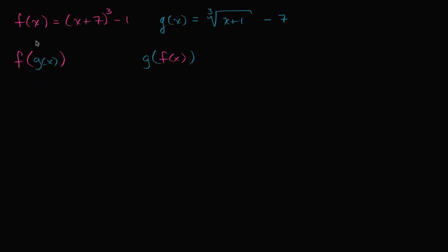All right, let's first evaluate f of g of x. That means g of x, this expression, is going to be our input. So everywhere we see an x in the definition for f of x, we replace it with g of x. So f of g of x is going to be equal to — I see an x right over there, so I write all of g of x there. That's the cube root of x plus one minus seven, and then plus seven, to the third power minus one. Wherever I saw the x, since I'm taking f of g of x, I replace it with what g of x is, which is the cube root of x plus one minus seven.